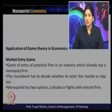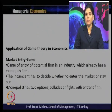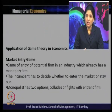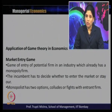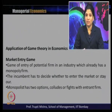The incumbent has to decide whether to enter the market or stay out — so the incumbent has two choices. On the other hand, the existing monopolist firm also has two options: whether to collude with the entrant firm or whether to fight with the entrant firm. So there are four options in total — for the incumbent, whether to enter or stay out, and for the existing firm, whether to fight or collude with the new entrant.